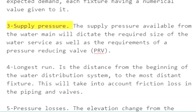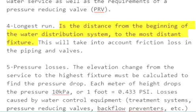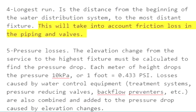3. Supply pressure. The supply pressure available from the water main will dictate the required size of the water service as well as the requirements of a pressure reducing valve. 4. Longest run is the distance from the beginning of the water distribution system to the most distant fixture. This will take into account friction loss in the piping and valves.